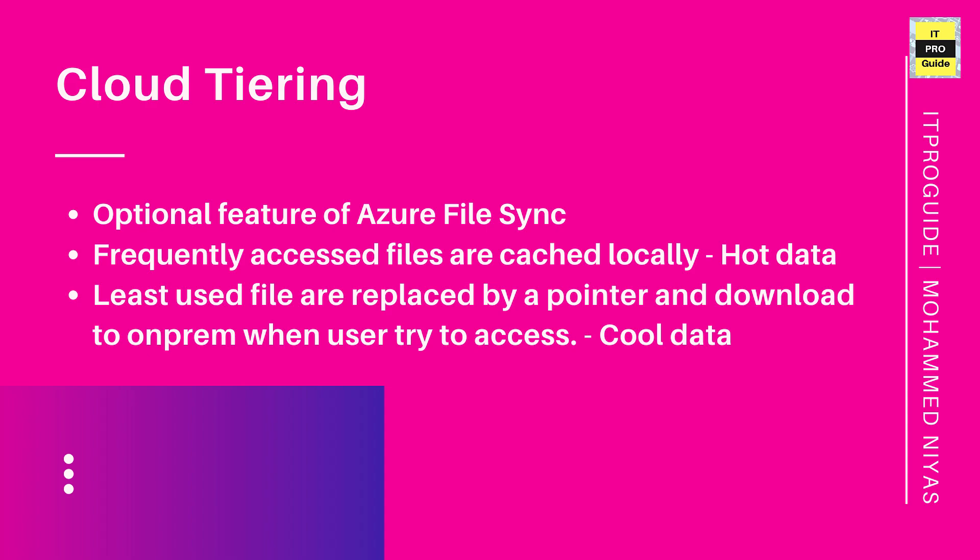In storage data we divide data into two types. Hot data is data that is frequently accessed or was recently opened and is considered hot data. A file that is barely touched or has not been accessed for some time is considered cool data.